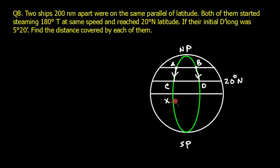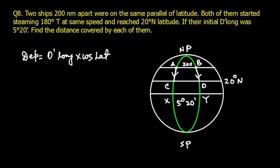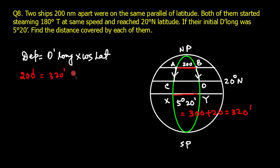Their initial D.Long is 5°20'. We need to find the distance covered by each ship. The formula is Departure = D.Long × cos(Latitude). Here, Departure is the 200nm distance between them. D.Long = 5°20' = 300 + 20 = 320 minutes. So: 200 = 320 × cos(Latitude).